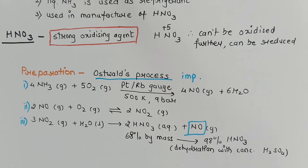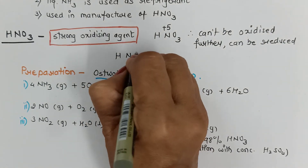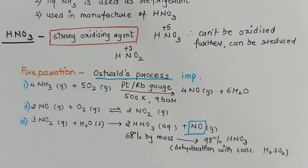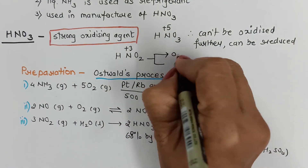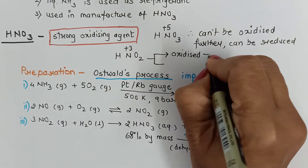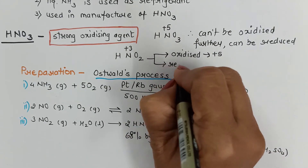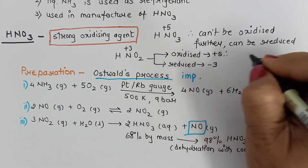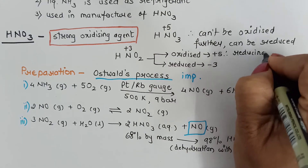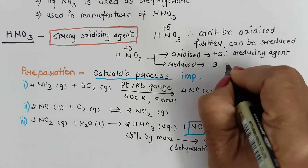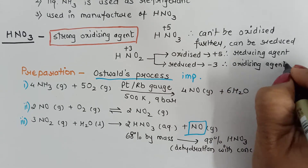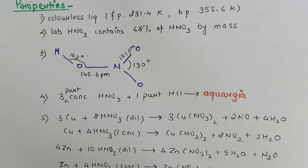In contrast, nitrous acid (HNO2) has nitrogen in the +3 oxidation state, which is an intermediate state. Therefore HNO2 can be oxidized to +5 as well as reduced to −3, meaning it can act as both a reducing agent and an oxidizing agent. But nitric acid acts only and only as an oxidizing agent.